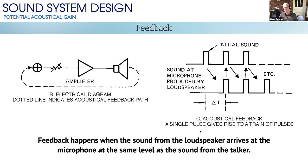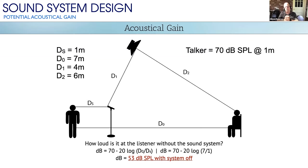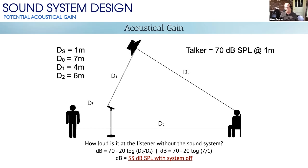The main thing to remember is that feedback happens when the sound from the loudspeaker arrives at the microphone at the same level as the sound from the talker. If we can avoid that scenario, we can prevent feedback. Let's look at what causes this. Let's assume DS is 1 meter, D0 is 7 meters, and the talker is speaking at 70 dB SPL at one meter away.